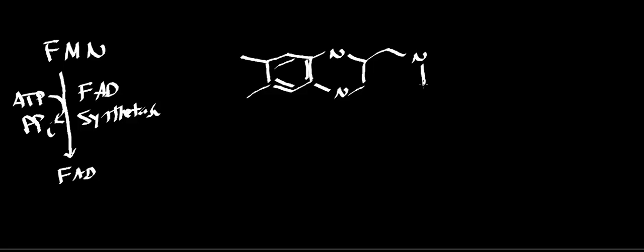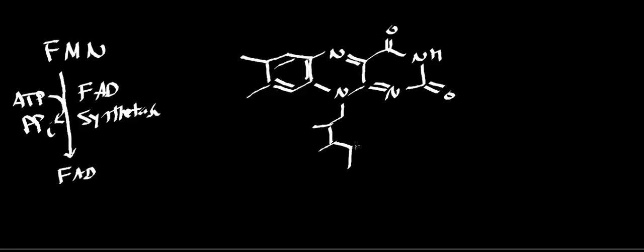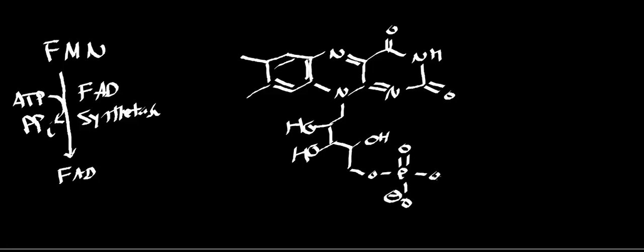Now I'm going to finish drawing FMN, flavin mononucleotide. What I'm drawing is the oxidized form, including the ribitol group. What you'll find with respect to FMN is that it's basically FAD without the AMP group.